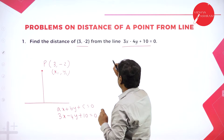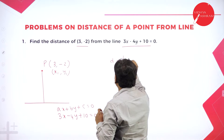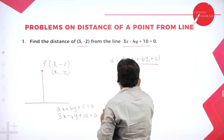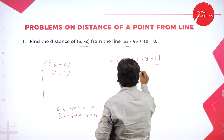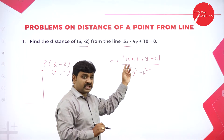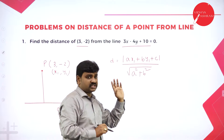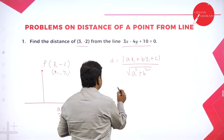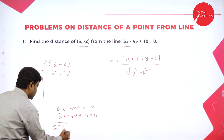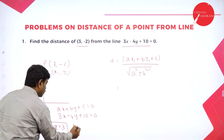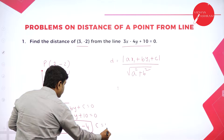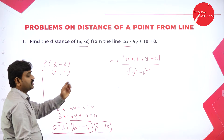The formula for distance of a point from a line is: D equals modulus of AX1 plus BY1 plus C, divided by root of A square plus B square. By comparison, A is the coefficient of X, so A is 3. B is the coefficient of Y, so B is minus 4. And C is the constant, so C is 10.